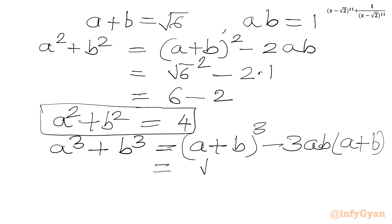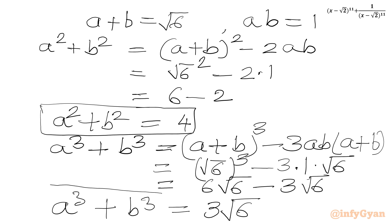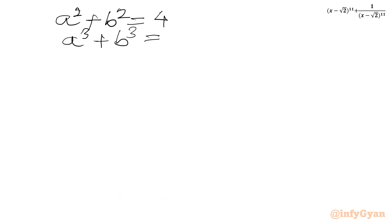So a cubed plus b cubed equals (root 6)³ minus 3 times 1 times root 6. Now (root 6)³ is 6 root 6, and 3 times root 6 is 3 root 6. So a cubed plus b cubed equals 6 root 6 minus 3 root 6, which equals 3 root 6. To summarize: a squared plus b squared is 4, and a cubed plus b cubed is 3 root 6. Next we will calculate a to the power 5 plus b to the power 5.